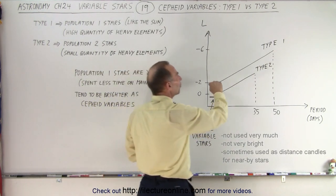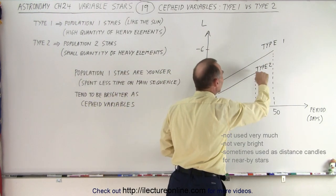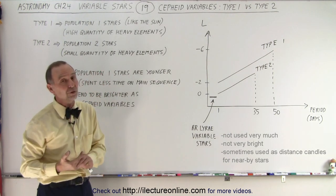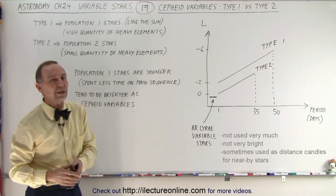So our preference is to use Type 1 variables but you can see we have similar relationships between period and luminosity for the Type 2's although not quite as bright.